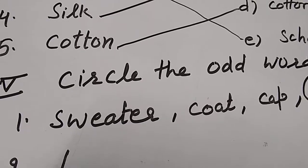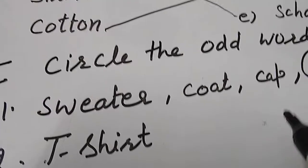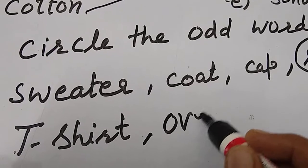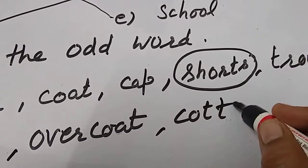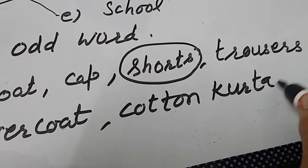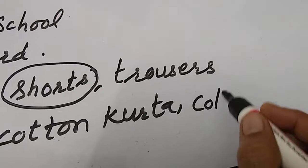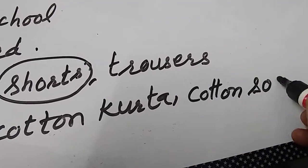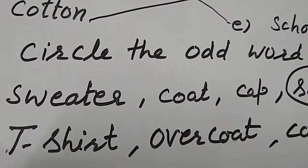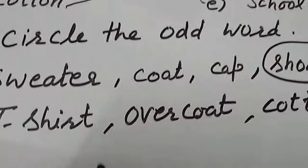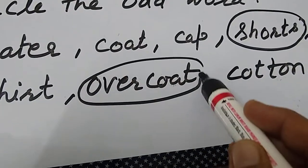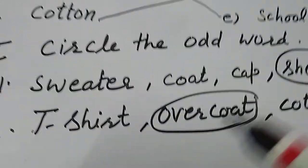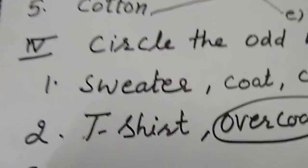Second one: t-shirt, and next one overcoat, and then cotton kurta, and cotton saree. Here are the words: t-shirt, overcoat, cotton kurta, cotton saree. All things are cotton clothes, but here overcoat is the different group out. We wear overcoat in winter.